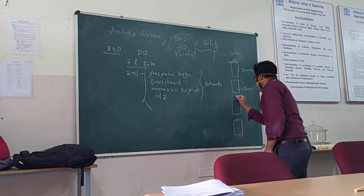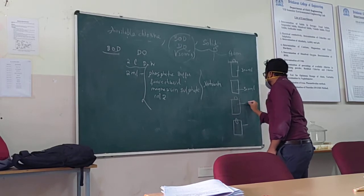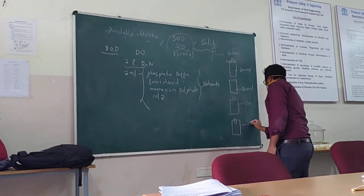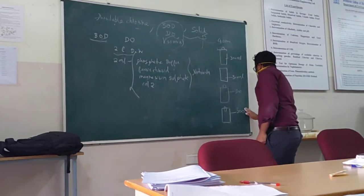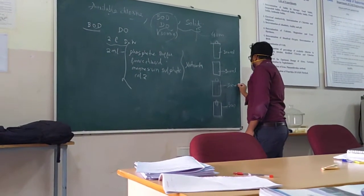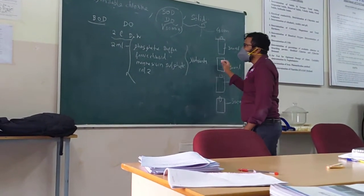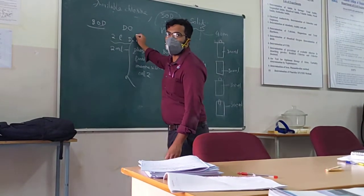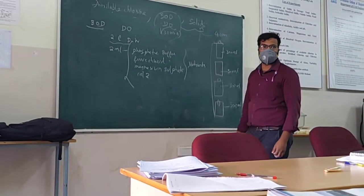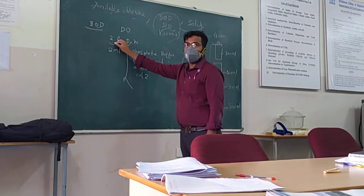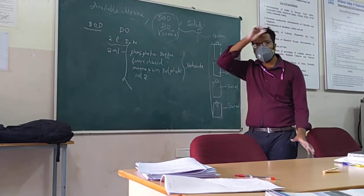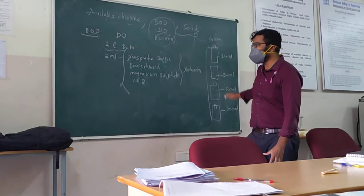So you also know that we need 4 BOD bottles, each of 300 ml. So the total capacity is 1200 ml. So that is why I have taken 2 liters so that I will get almost sufficient amount to fill up all the bottles.